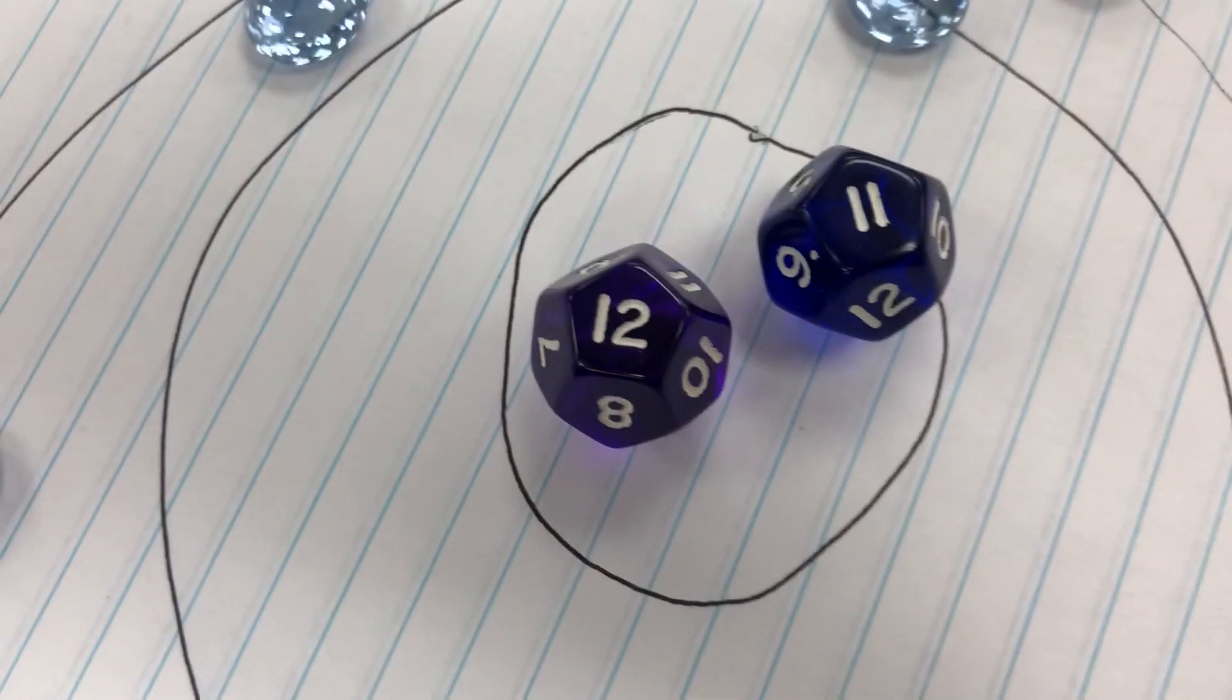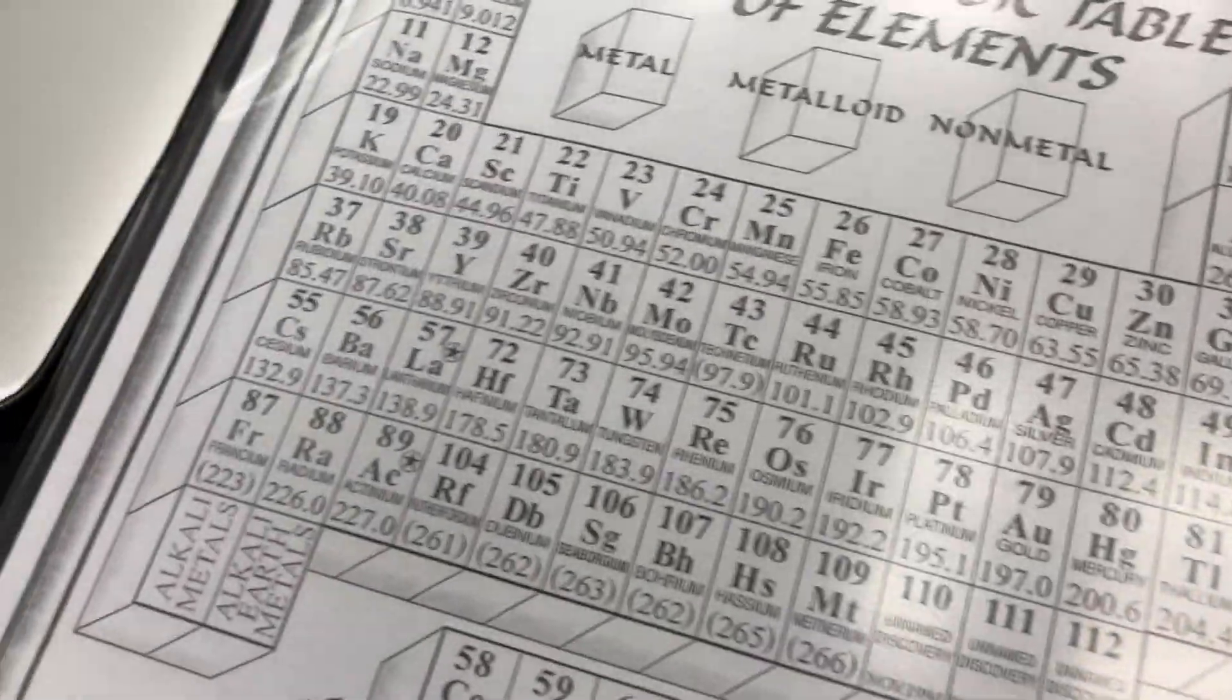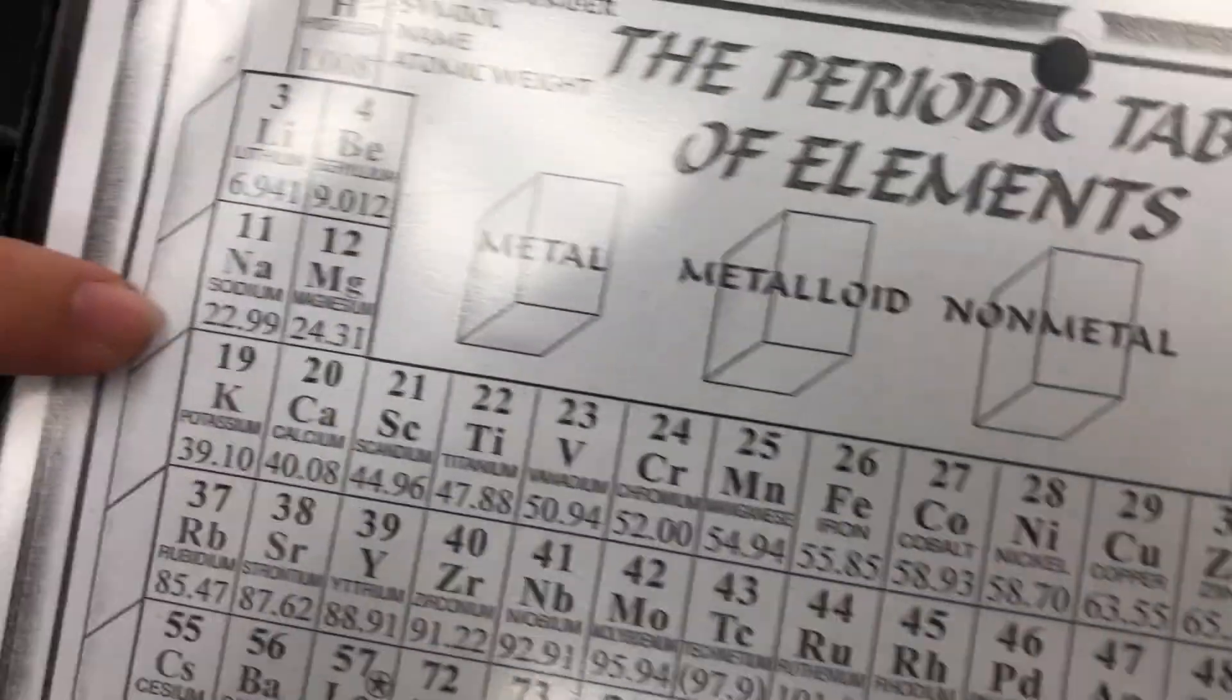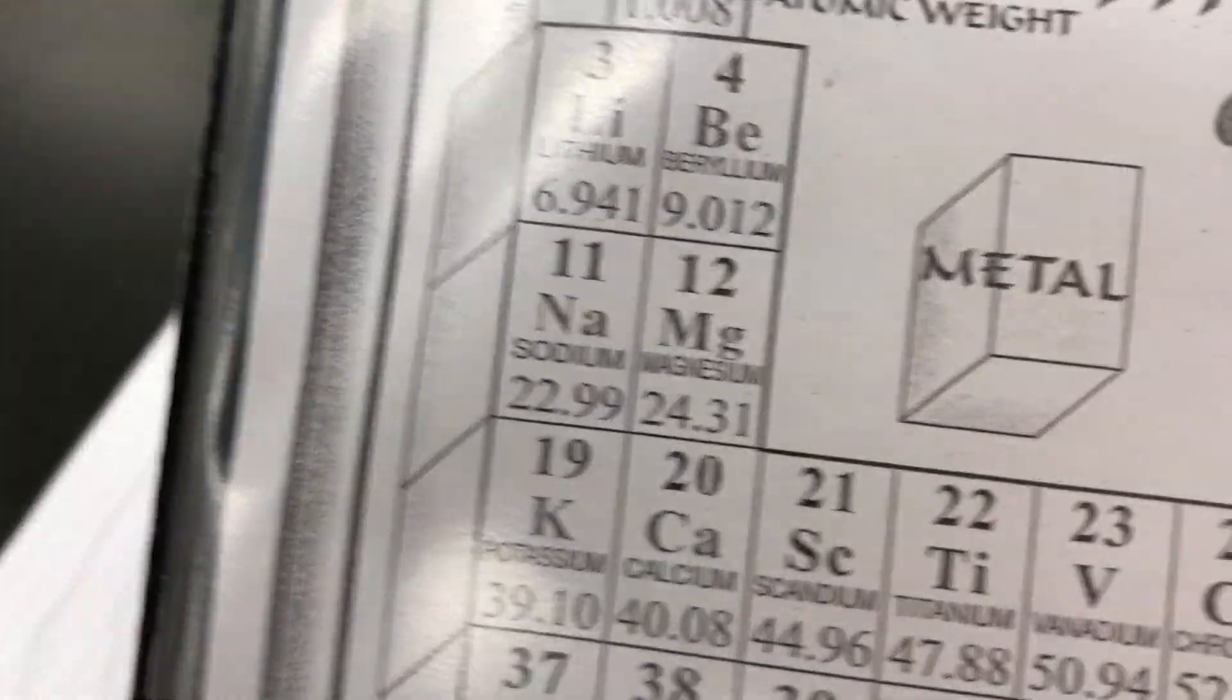So how did you know to get 11 protons, 12 neutrons, 11 electrons? Because of my mass number. Okay, well where's that mass number on it? It's gonna be right here, 22.99, which rounds up to 23.